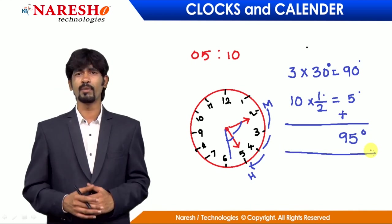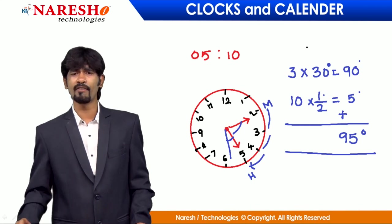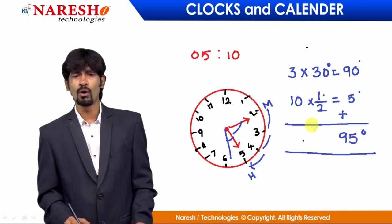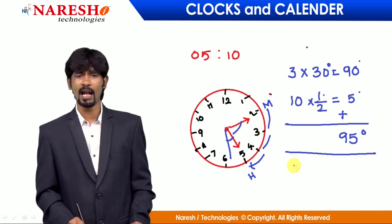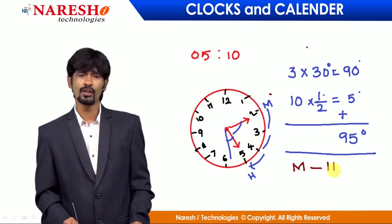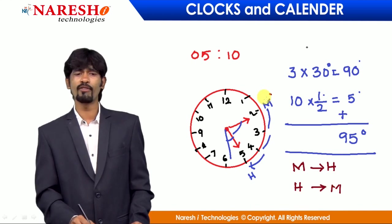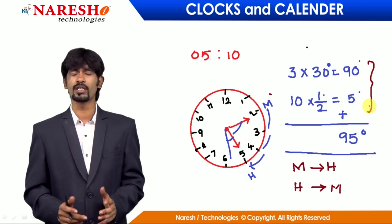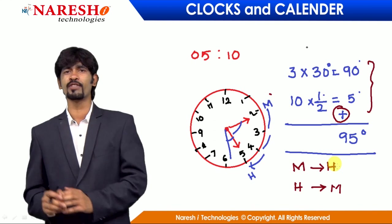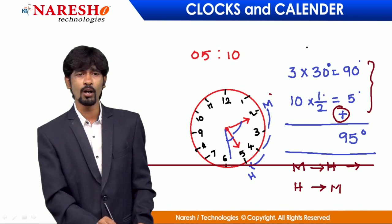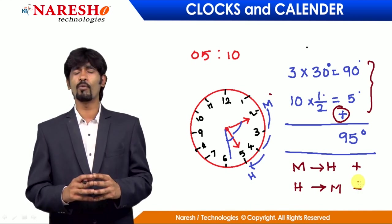To get clarity on when to add and when to subtract: if you are going from the minutes hand to the hours hand (M to H), add — think of Mahendra Singh Dhoni's helicopter shot, always positive. If you are going from the hours hand to the minutes hand (H to M), subtract. Use this simple trick to arrive at the answer faster.